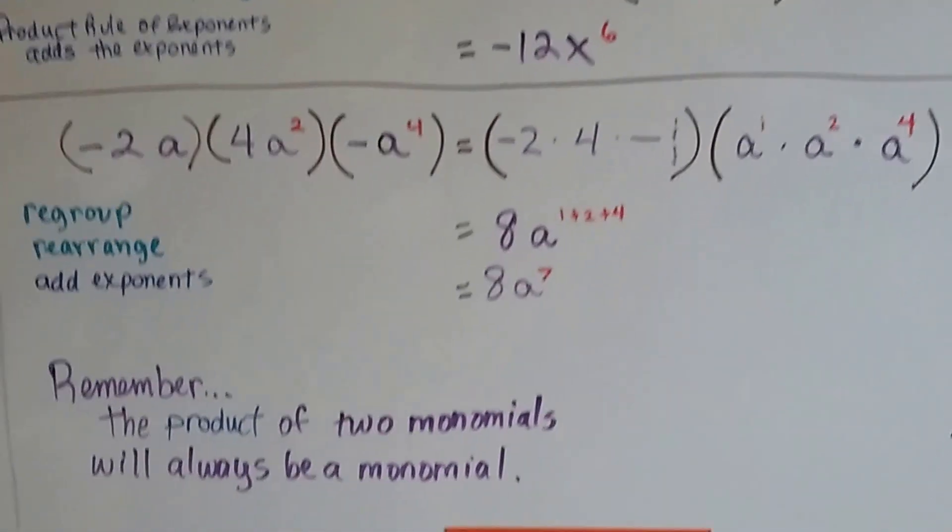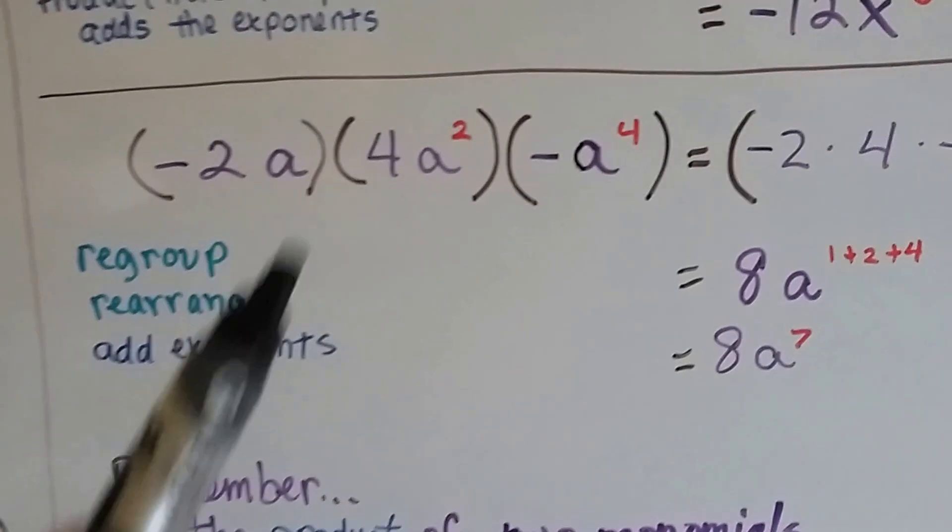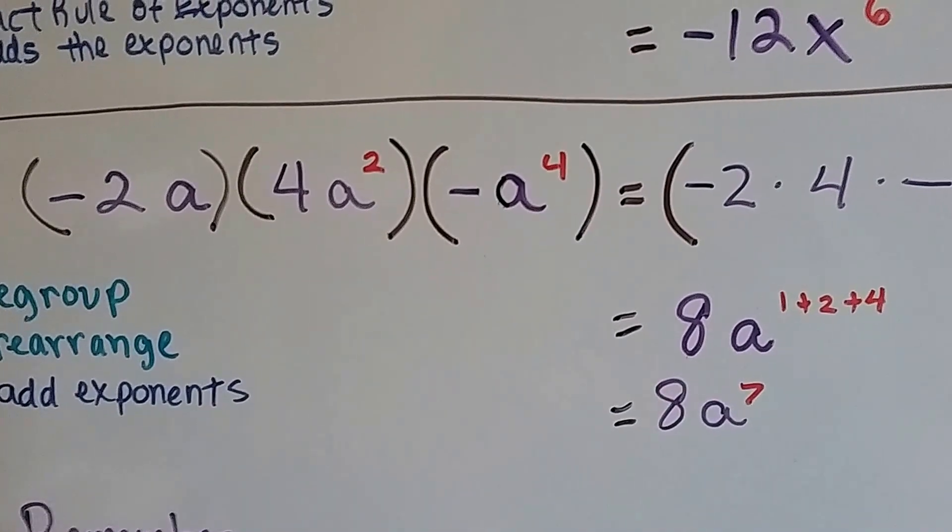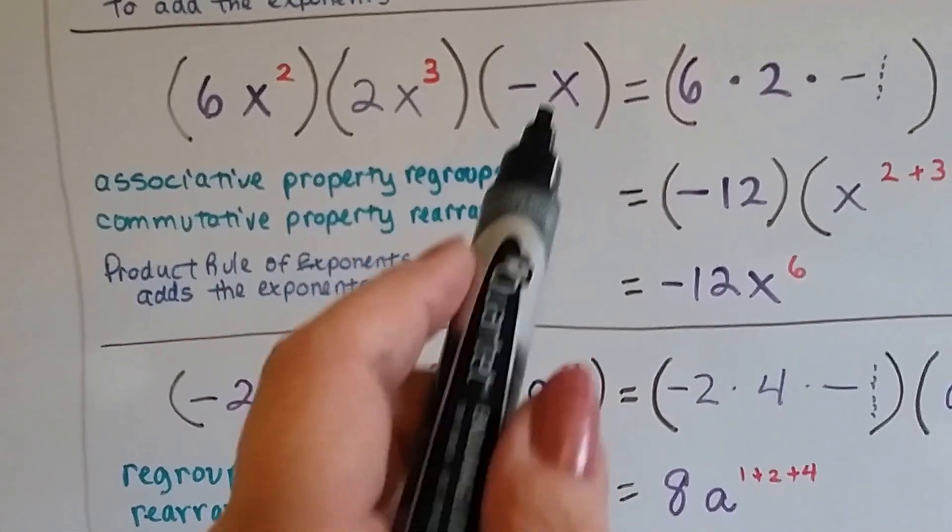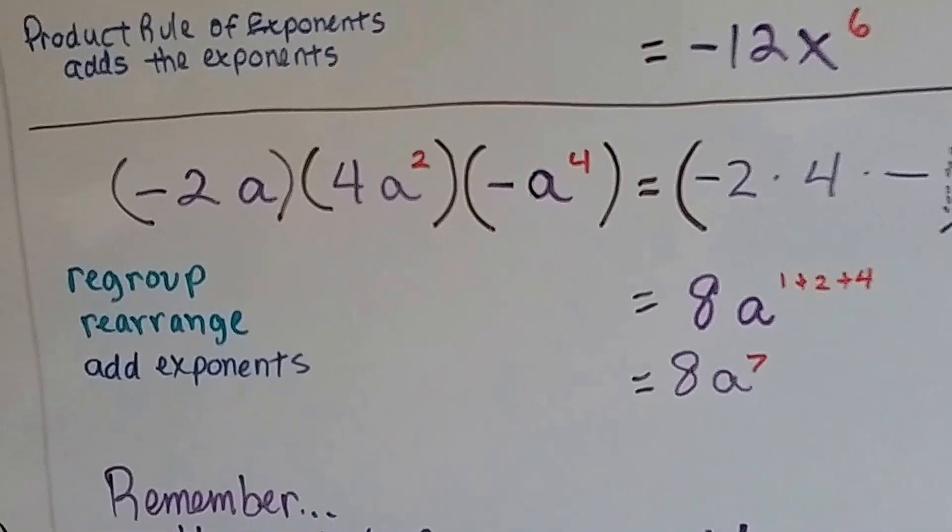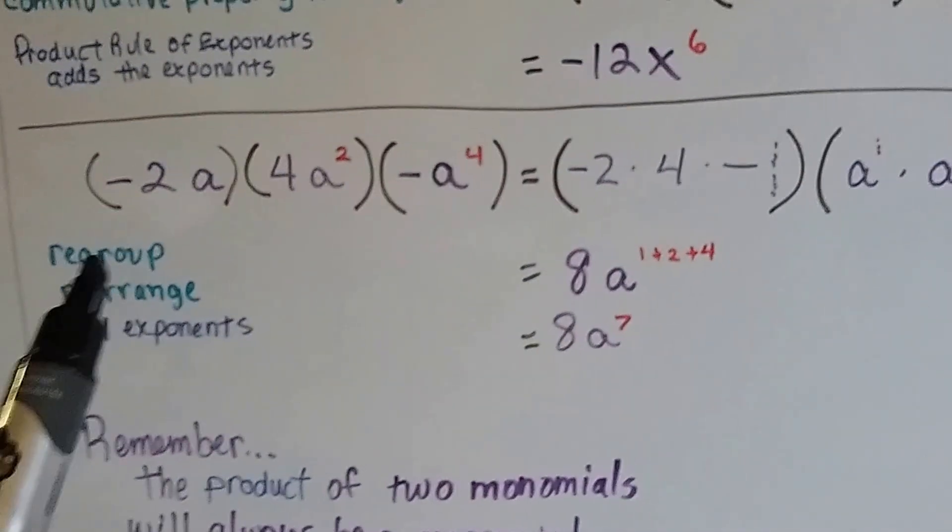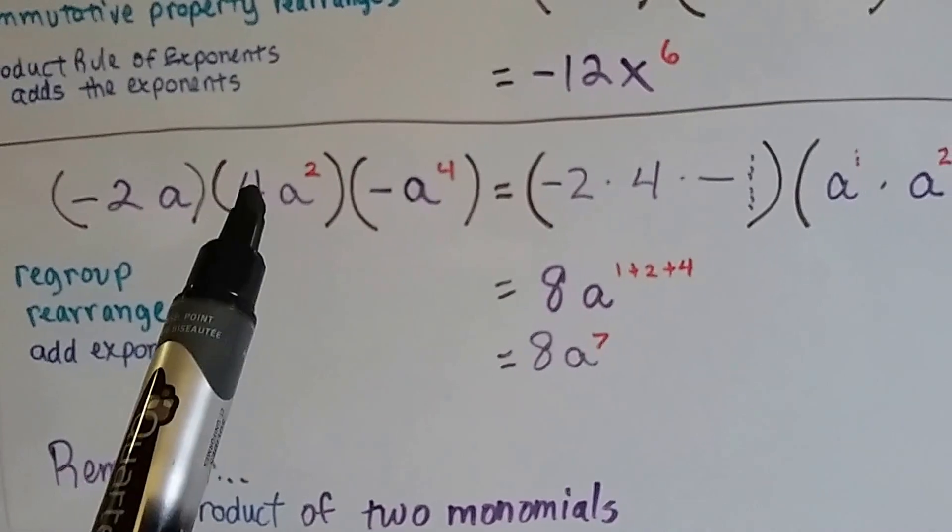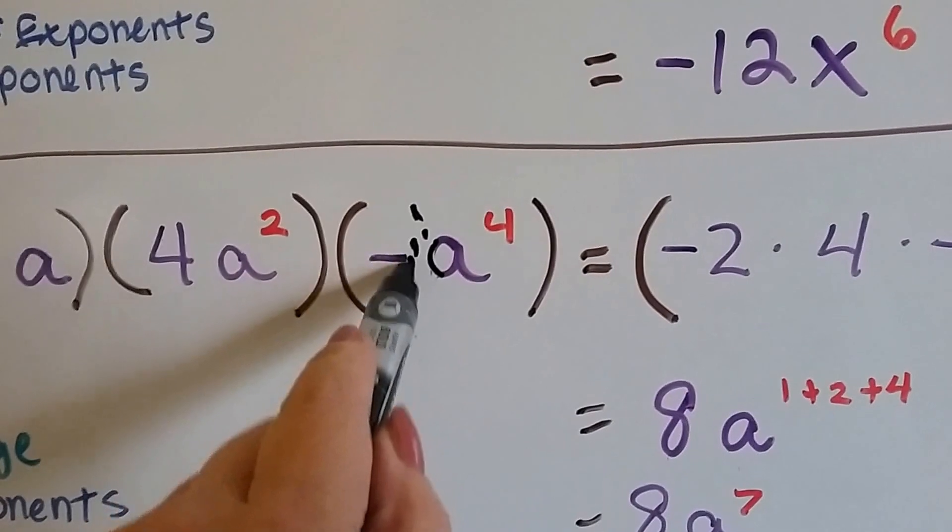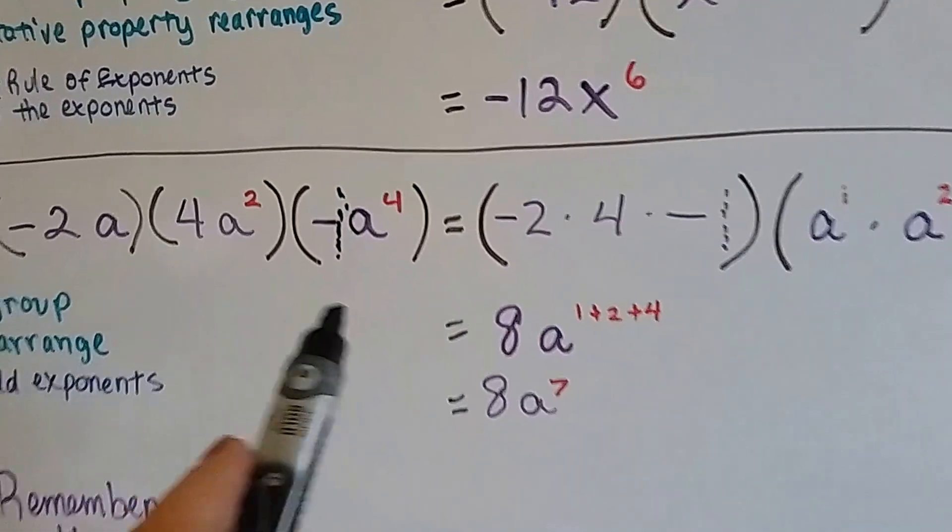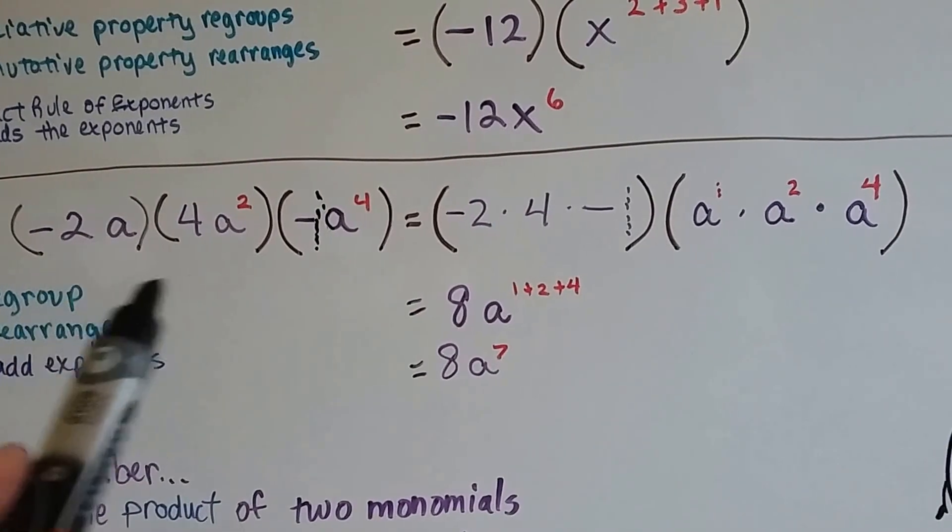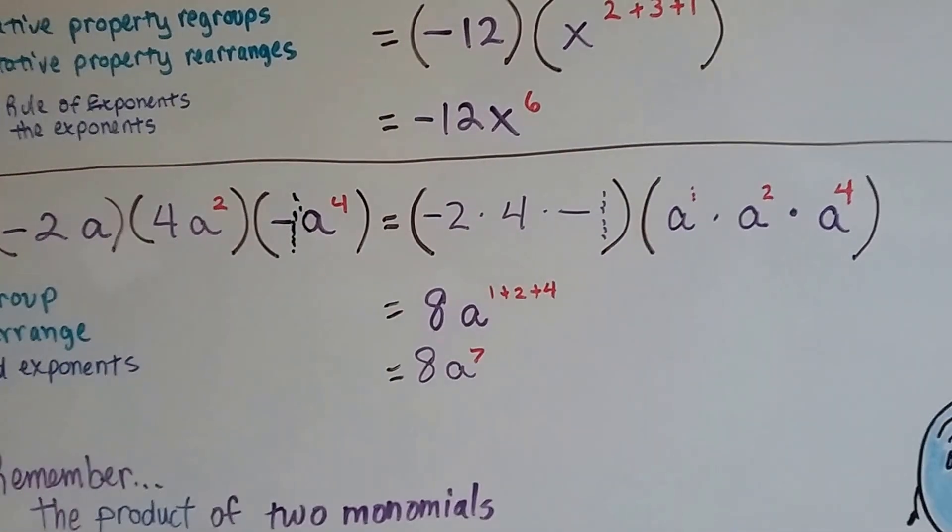Let's try one last harder one. We've got negative 2a times 4a squared times negative a to the fourth. So, before our negative variable didn't have an exponent. Now it does. We're going to regroup, rearrange, and add the exponents. So, let's regroup them. Let's put out all the numbers. We've got a negative 2, a 4, and a negative 1 right here. Our friend, the invisible one. So, we're going to pull him out with the negative 2 and the 4. And we're going to put them together. Then we're going to pull out the a, the a squared, and the a to the fourth power, and put them together.